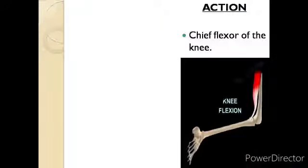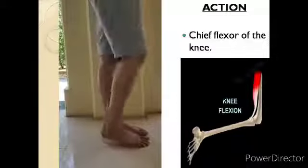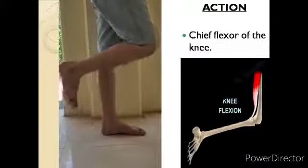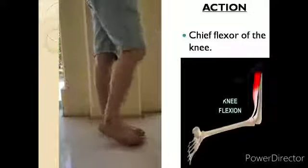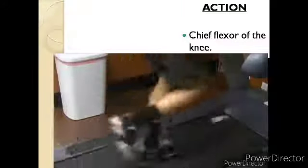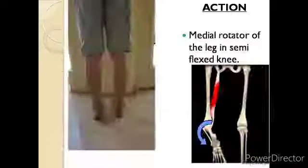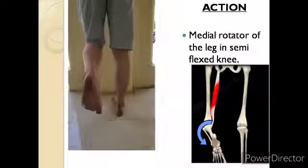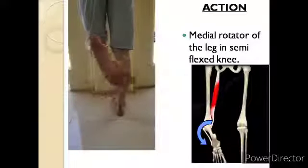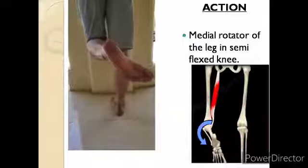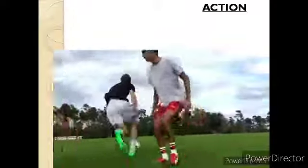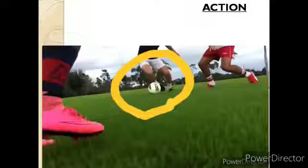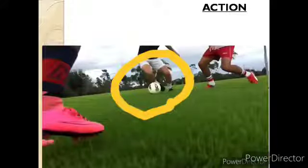Actions of semimembranosus muscle: semimembranosus muscle is a chief flexor of the knee. As you can see in the figure, it helps in the flexion of the knee. It also acts as a medial rotator of the leg in a semiflexed knee — for example, in football while passing the ball, we can see in the figure that the knee is semiflexed and the leg is medially rotated.